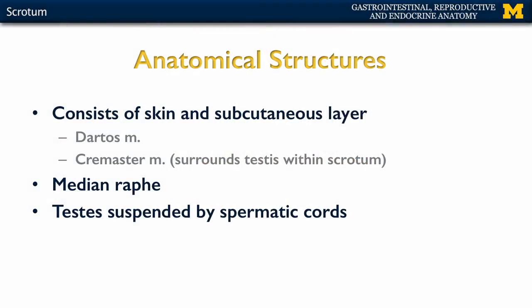In our discussion of the testes, we talked about one of the main support systems, which is going to be the scrotum. Now there are a few layers that we want to talk about. We typically think of it as almost like a skin sac, and that's exactly what it is — there is what we refer to as scrotal skin, and scrotal skin is going to have a lot of things associated with it.